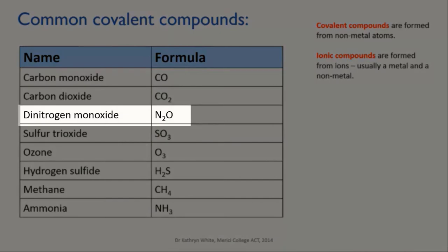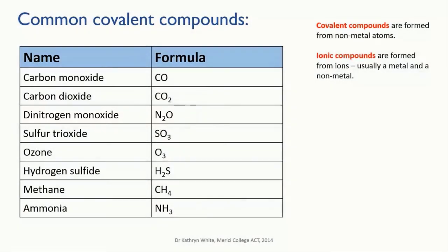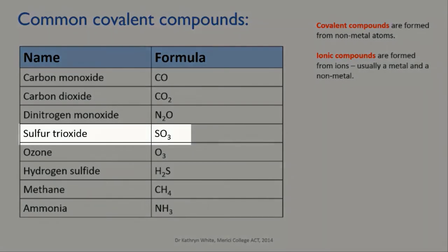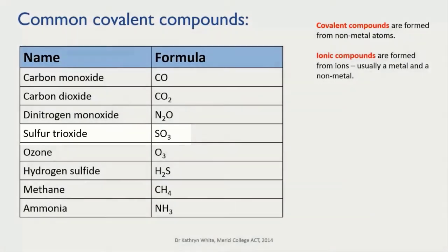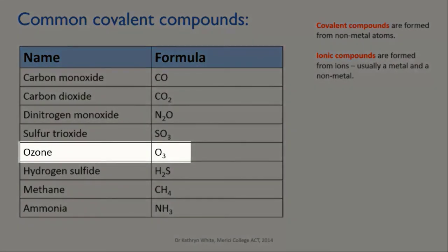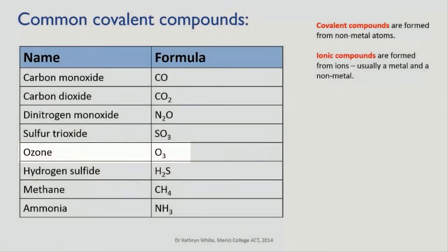Dinitrogen monoxide is laughing gas. It has an anaesthetic effect, and is often used by dentists or as pain relief for women giving birth. Sulfur trioxide is a gas pollutant, and one of the compounds that produces acid rain when it combines with rainwater. Ozone is another toxic gas, but the layer of it that exists high in the atmosphere fulfills a vital role.